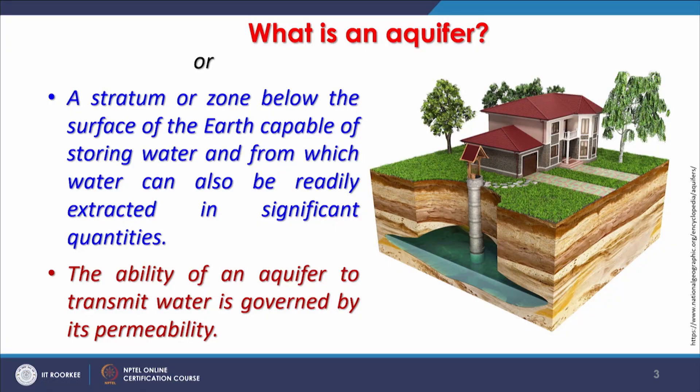Another kind of definition found in the literature is that an aquifer is a body of porous rock or sediment saturated with groundwater. However, if permeability is not there — if porous rock is present but it is not saturated or does not allow water to move from one place to another — then there is a problem. A lengthier definition states that an aquifer is a stratum or zone below the surface of rock capable of storing water from which water can also be readily extracted in significant quantities.